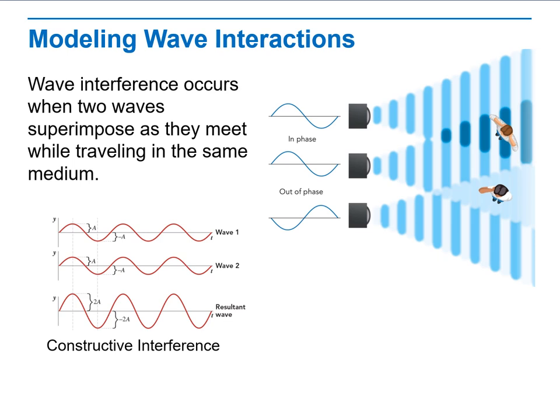Constructive interference is when the waves build up to produce a wave with a larger amplitude. Predict what the graph of the resultant wave of destructive interference looks like.